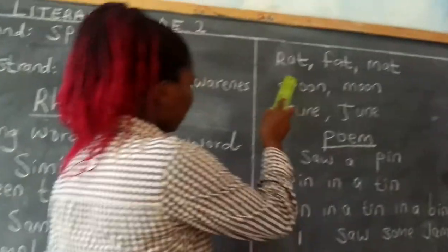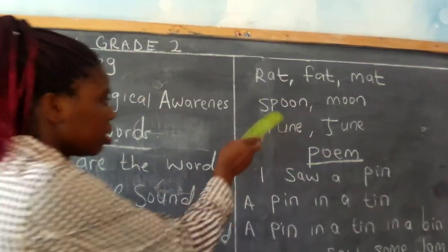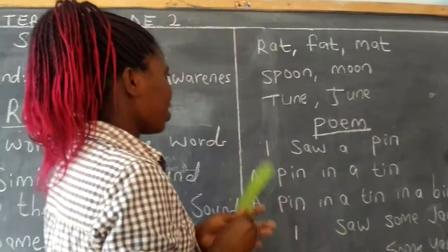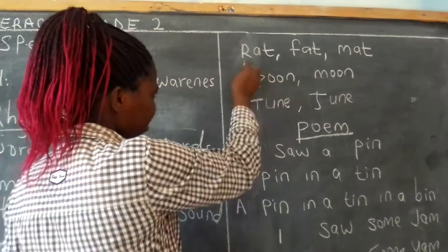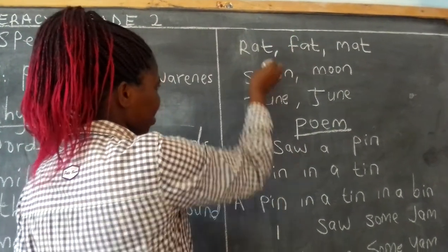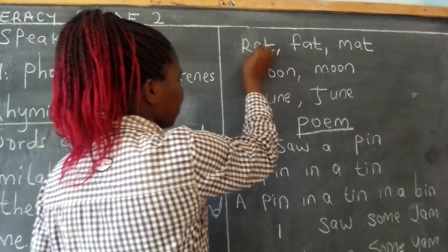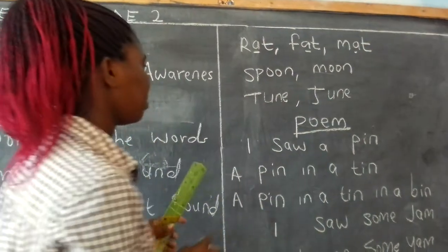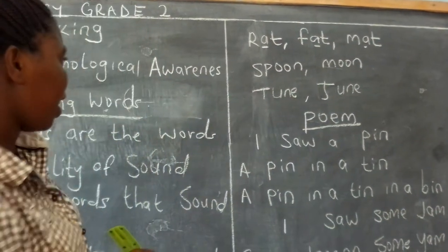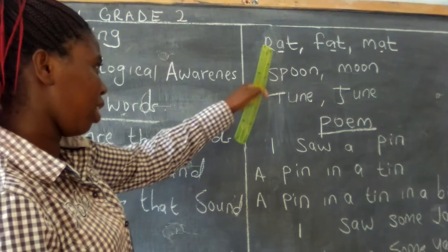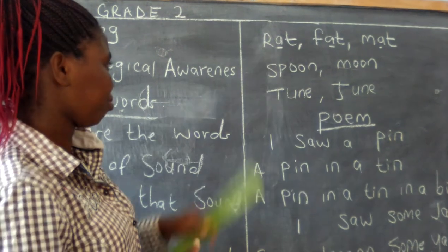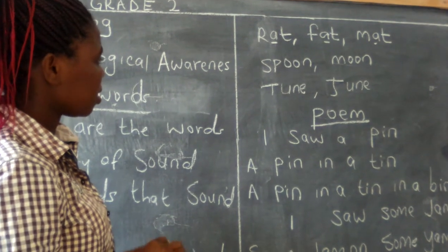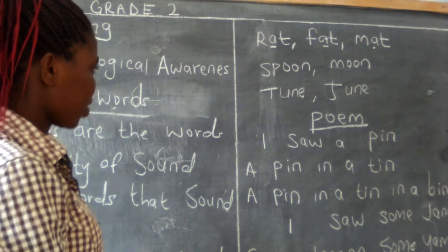We also have 'rat', 'fat', 'mat'. You can see the A between those words makes them rhyme.